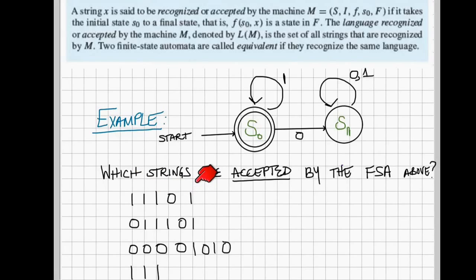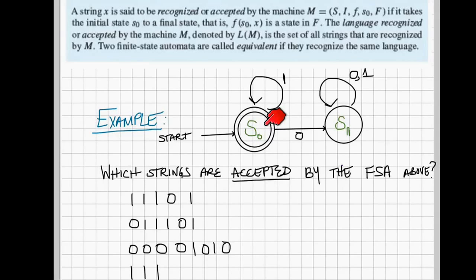0, 1. So what we do is we start at our initial position and we follow what happens for each symbol.